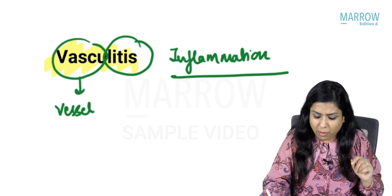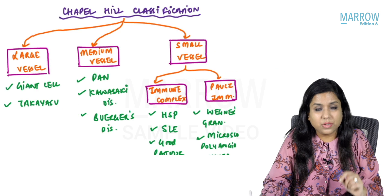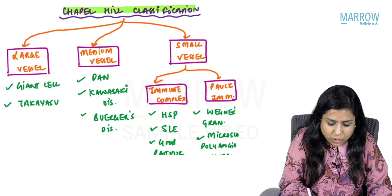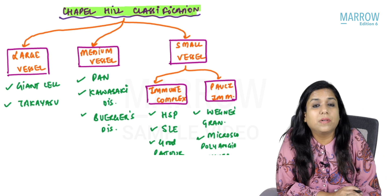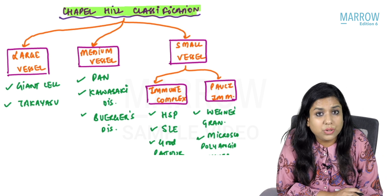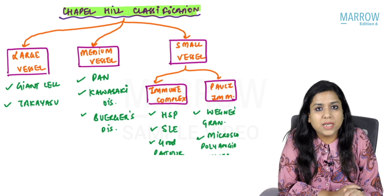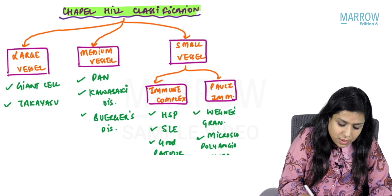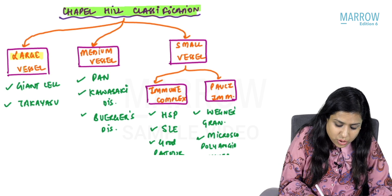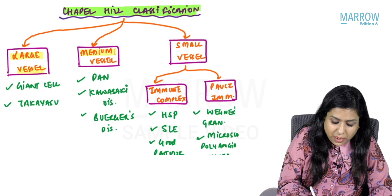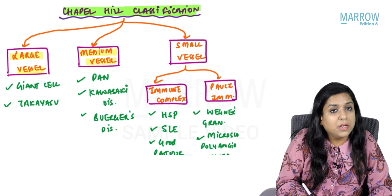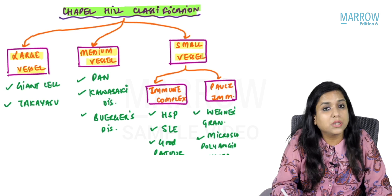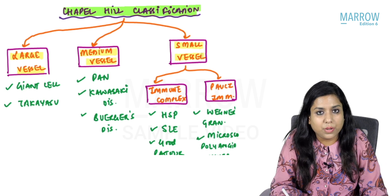A very important concept in vasculitis is the Chapel Hill classification, which says vasculitis is basically of three types: large vessel vasculitis, predominantly medium vessel vasculitis, and predominantly small vessel vasculitis.